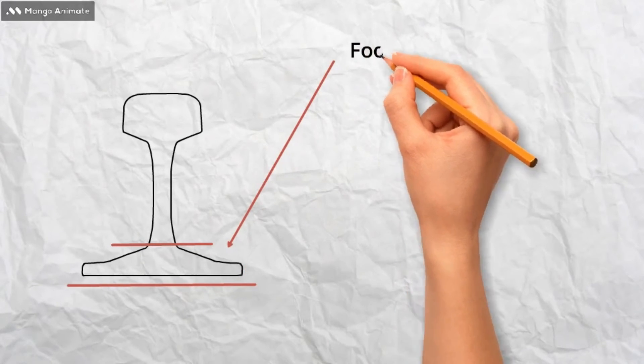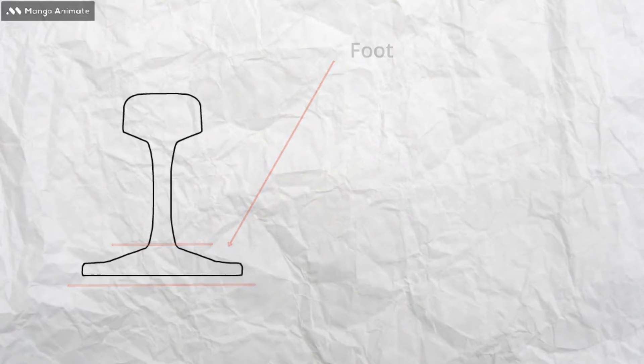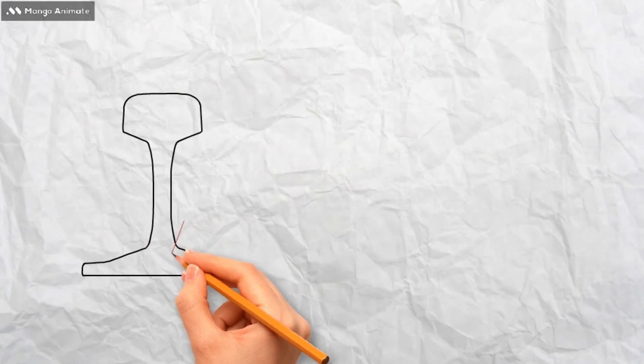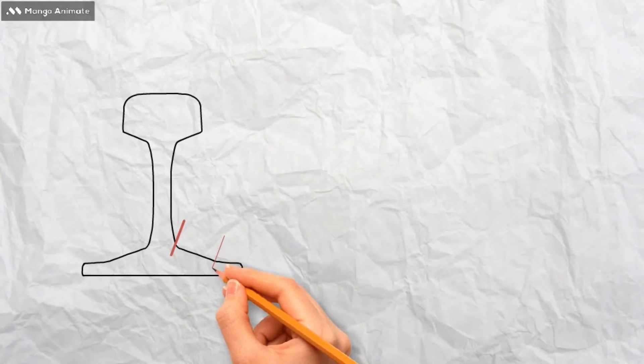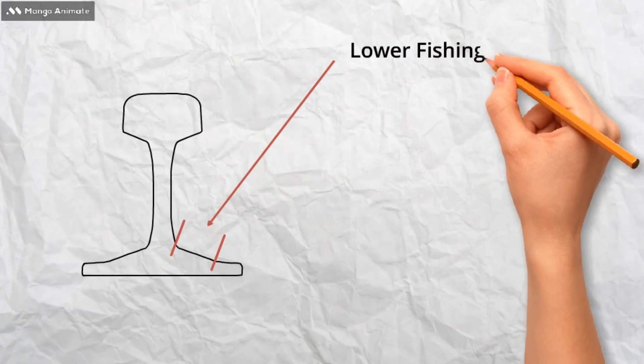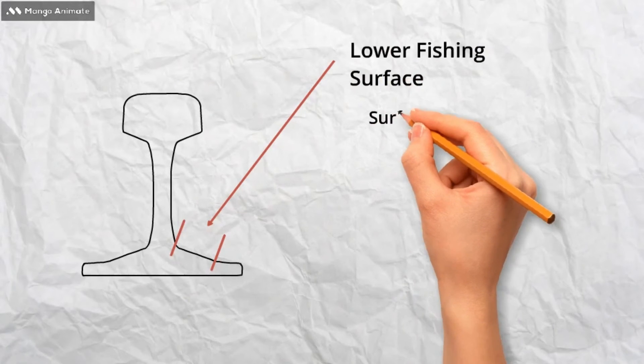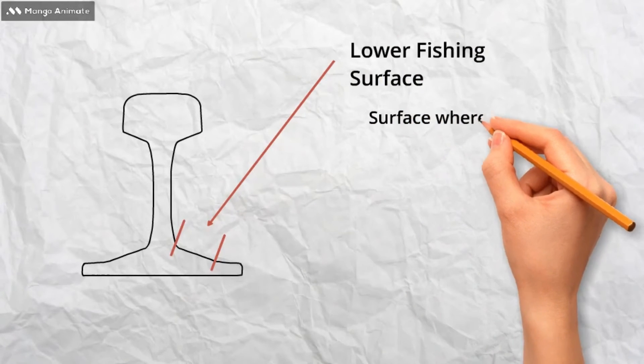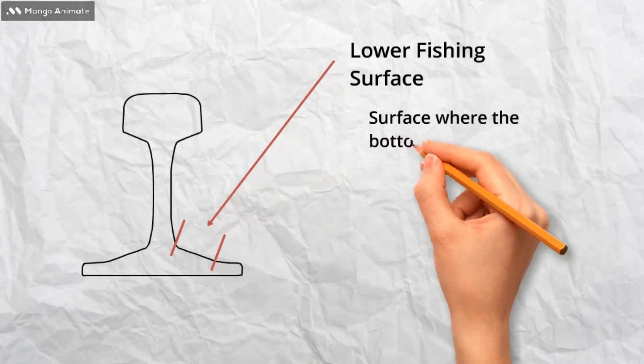At the bottom of the web, we move to the foot. Similar to the head of the rail, the foot is made up of a number of smaller parts. At the top of the foot, there is the lower fishing surface, where the bottom of any fish plates will contact the rail.